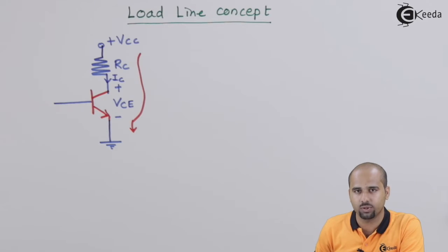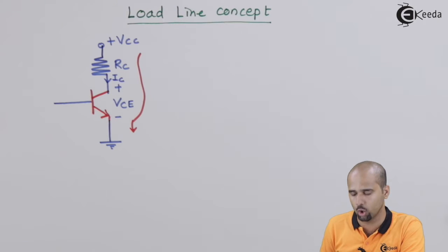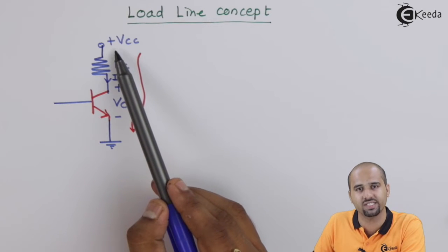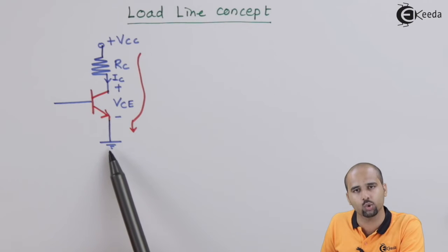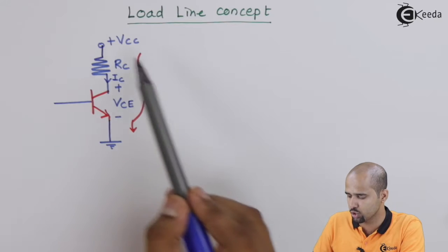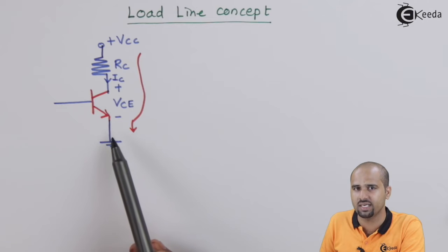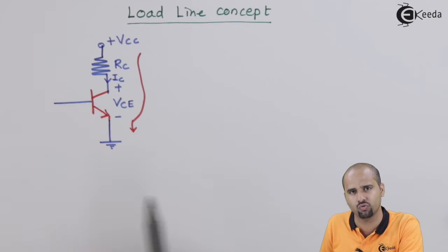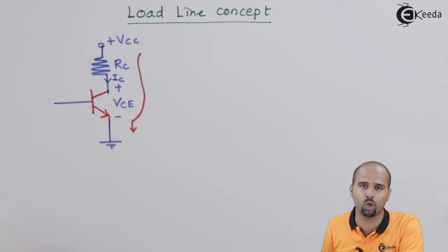In the load line concept, we will have a circuit which consists of a load in the form of resistance RC, which is then connected to DC voltage plus VCC. The emitter terminal is directly connected to ground. Even if we apply one resistor at the emitter side and connect the emitter to ground through one resistor, that is also fine. Here we are taking the general case where we have only one resistor in the form of load.